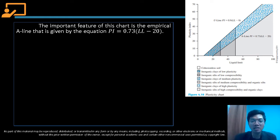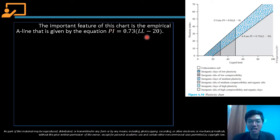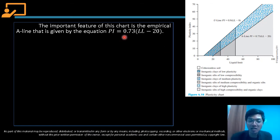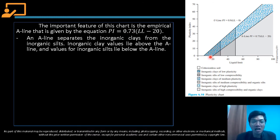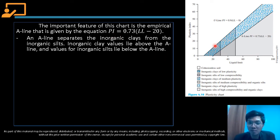The important feature of this chart is the empirical A-line, given by the equation PI = 0.73(LL − 20), where PI is the plasticity index and LL is the liquid limit. The A-line separates the inorganic clay, which is above the A-line, from the inorganic silts, which are below the A-line.